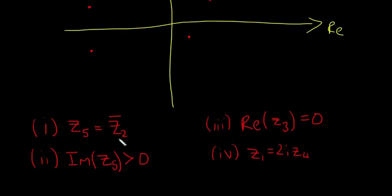So Z5 is equal to the conjugate of Z2, the imaginary part, so that's what that means here, imaginary part of Z5 is greater than zero, the real part of Z3 is equal to zero, and Z1 is equal to 2i multiplied by Z4.